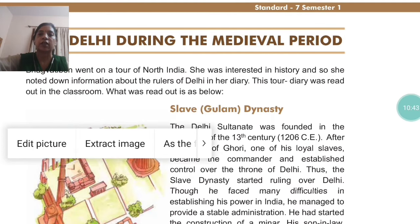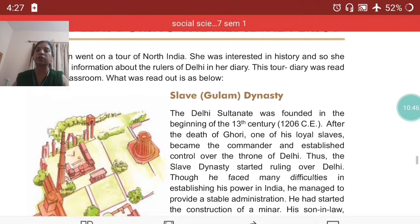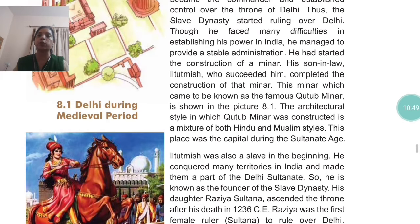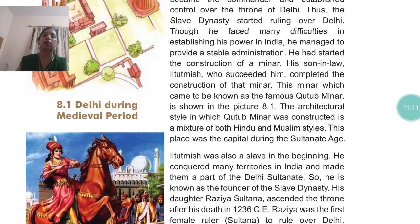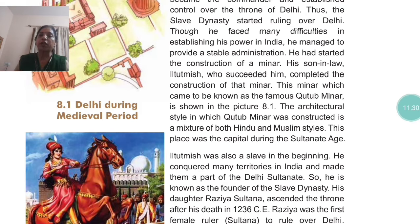Though he faced many difficulties in establishing his power in India, he managed to provide a stable administration. He had started the construction of a minar. His son-in-law Altomish, who succeeded him, completed the construction of that minar, which came to be known as the famous Qutub Minar — a very beautiful monument constructed by Altomish, located in Delhi.